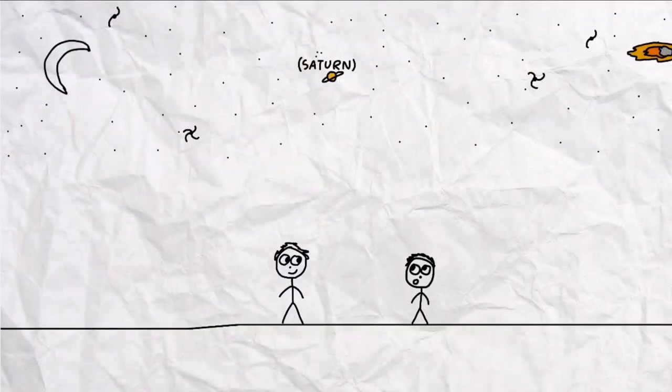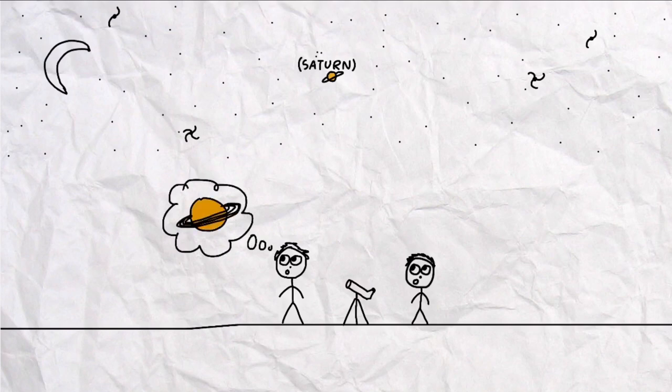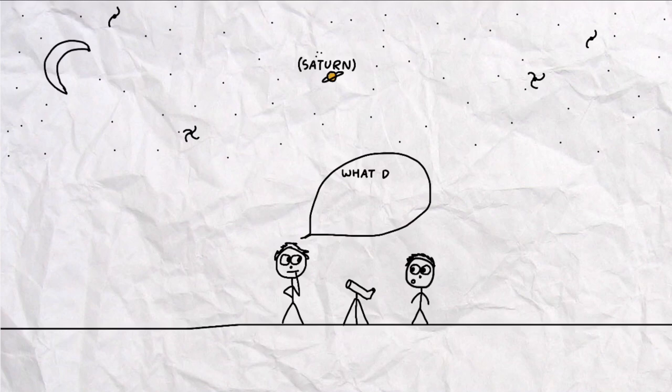One clear night, in the midst of the 19th century, Edouard Roche and his friend used a telescope to gaze at Saturn as bright as it could be. Stimulated by the awesome view of the planet, Roche asked his friend, what do you think formed those rings of Saturn?